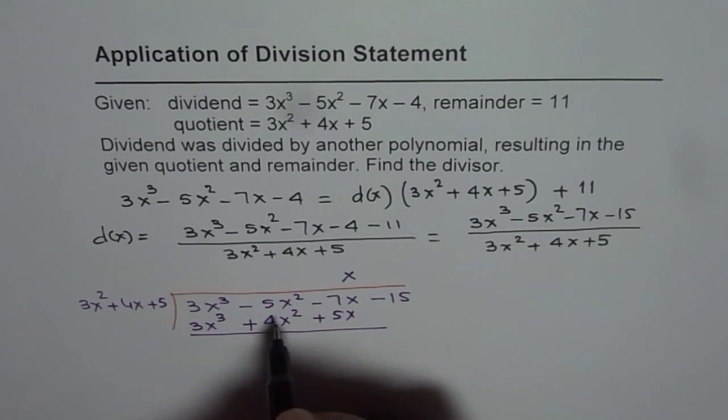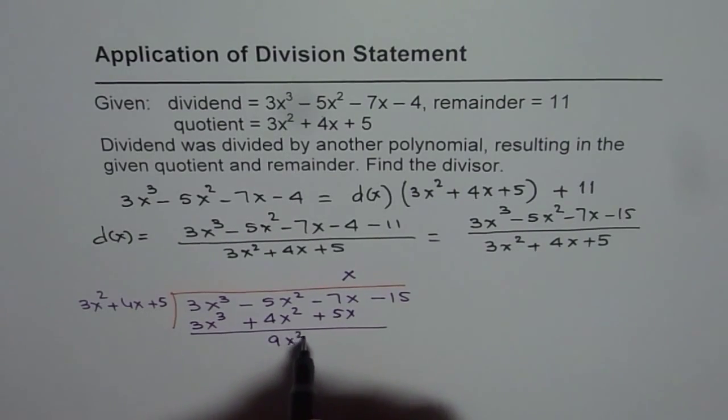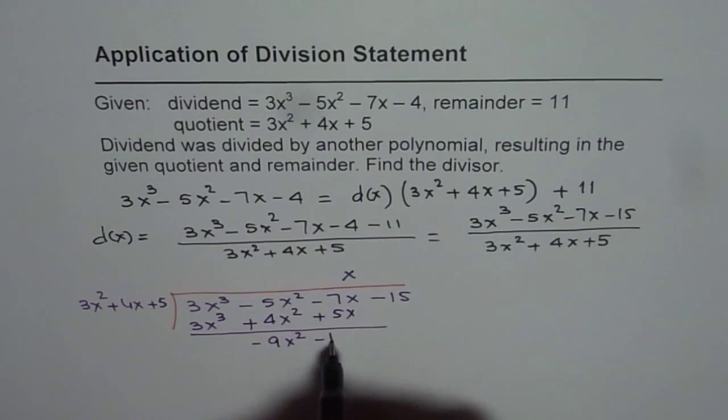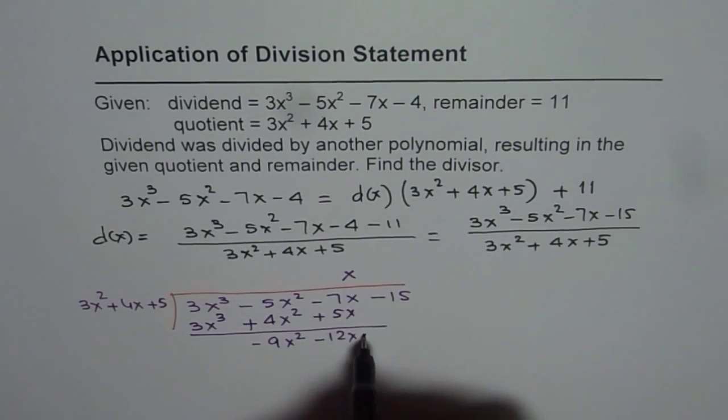When you take away, you get 9x square, this is minus 12x. Let's bring down minus 15.